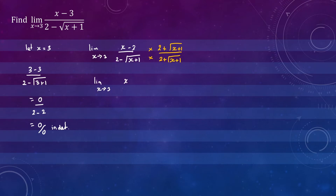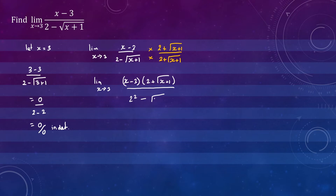For our numerator, we'll have x minus 3 times 2 plus the square root of x plus 1. And in the denominator, we'll have 2 squared minus the square root of x plus 1 all squared.